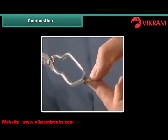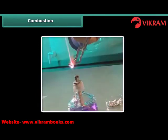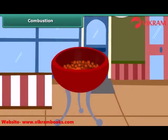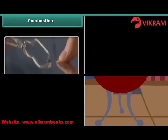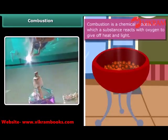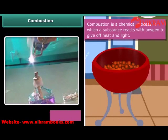Rohan is performing a simple activity. He is burning a magnesium wire on a flame. Notice carefully — heat and light are also produced along with magnesium oxide. Now look at the burning of coal. This burns in air producing carbon dioxide, heat and light. In both examples, the substances are reacting with the oxygen of the air to produce heat and light. This process is called combustion.